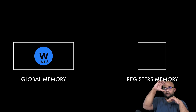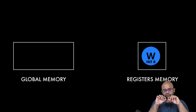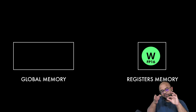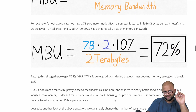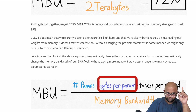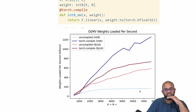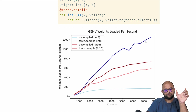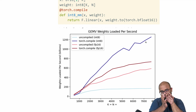The weights in global memory are now in int8. They copy these int8 weights to the register, then convert int8 back to fp16 or bf16 for computation. However, just doing this they actually observed a performance degradation. They need to use torch.compile to see a performance improvement. The light blue line shows the uncompiled int8 version, and the dark blue line shows the best performing result — torch.compile plus int8.